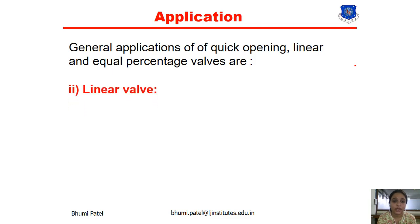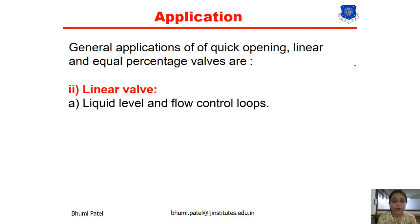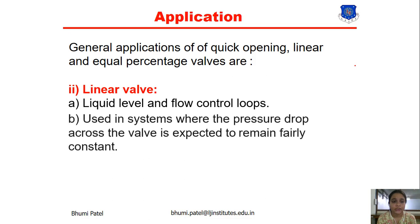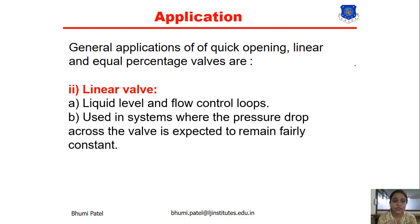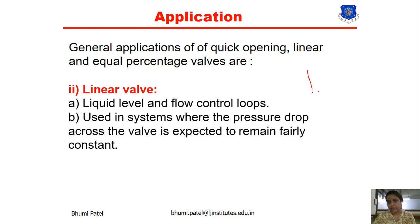The next application is for the linear valve. The linear valve is generally used for liquid level and flow control loops. It is also used in systems where the pressure drop across the valve is expected to remain fairly constant, because the graph of the linear characteristic is a straight line.